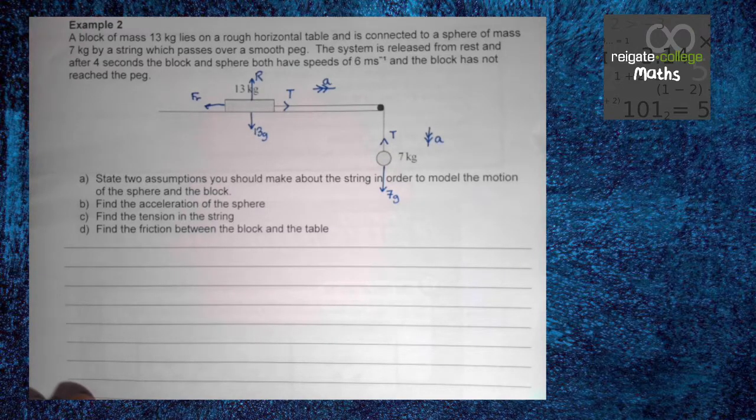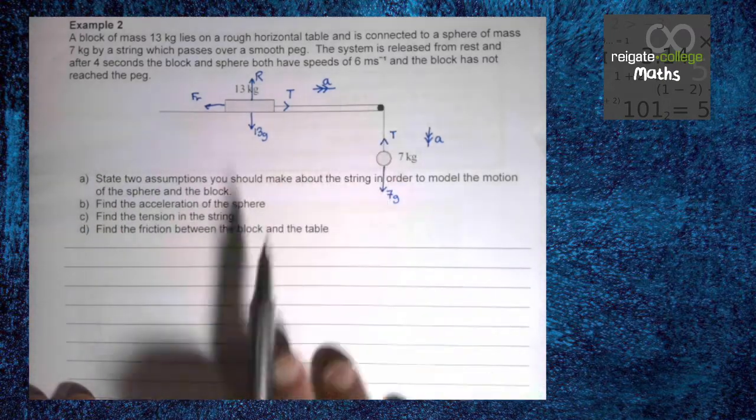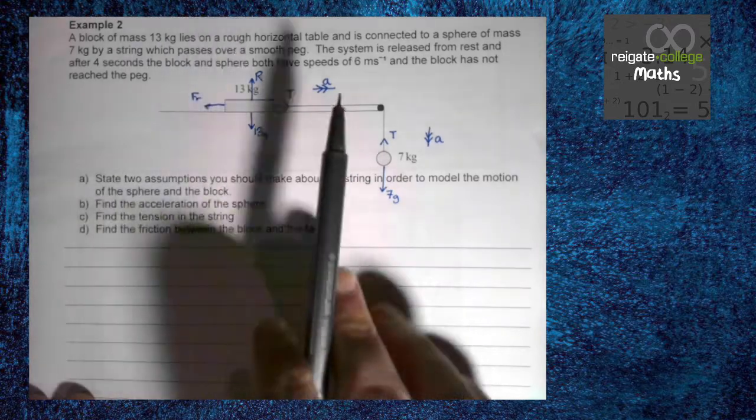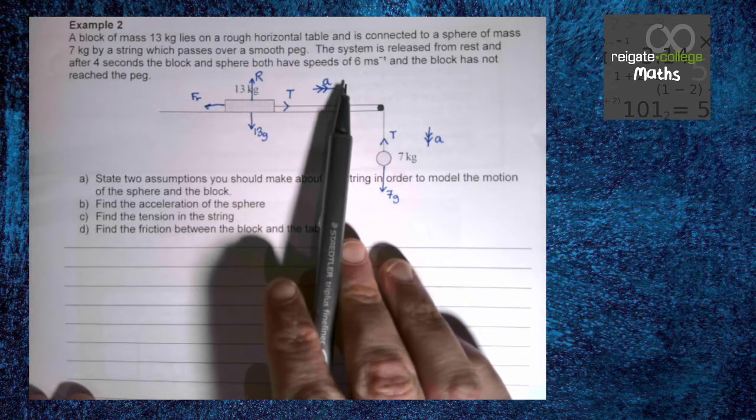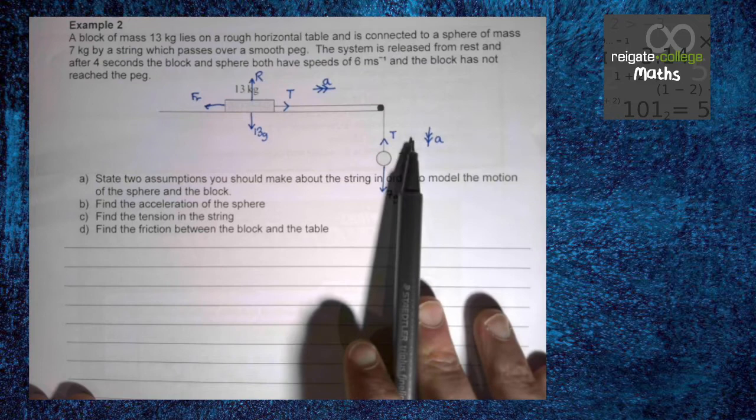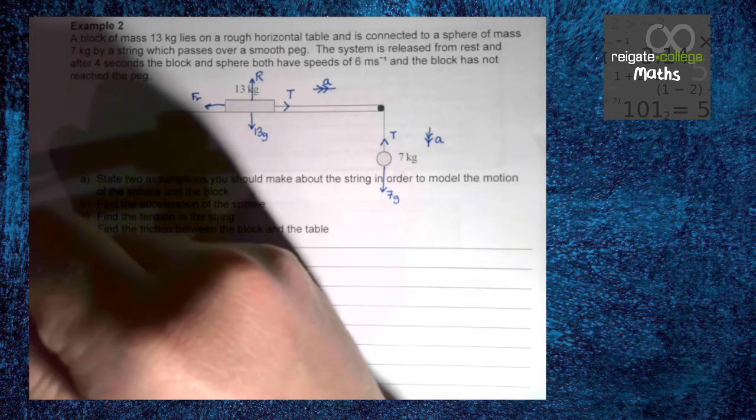So, part A. State two assumptions you should make about the string in order to model the motion of the sphere and the block. We've already done a couple of examples in this video and the previous one as to how we model the string. It's light and inextensible. You write that. So, find the acceleration of the sphere. The acceleration of the sphere and the block are the same. But we can't do the method we were looking at previously because we don't know the tension. We can't look at each separately because we don't know the friction. So, we've got to do something else. In this case, we're doing kind of the example we just did backwards. We know some SUVAT material here. So, we can use that to find acceleration. We can then use that to find tension, then use that to find friction. Might not always be working that way, but there we go.